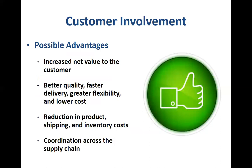Customer involvement within processes can have possible advantages and disadvantages. Organizations can ensure that processes are structured so that in some of these processes, customers have direct input in terms of what the needs might be. For example, organizations like IKEA have ensured that the final assembly process is done by the customers, so customers are actively involved in one of the processes. Many service organizations have also set up automated machines — for example, automated teller machines in banks or self-checkout within grocery chains. These are examples of customer involvement in services.